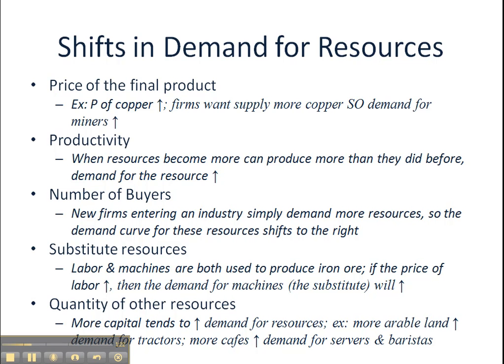Productivity — when a resource becomes more productive, meaning when each unit of resource can produce more output, the firm will use more of that particular resource. For instance, if new printing presses are able to produce twice as much in the same amount of time as the existing printing presses, the demand for new printing presses will rise and the demand curve for printing presses will shift out to the right.